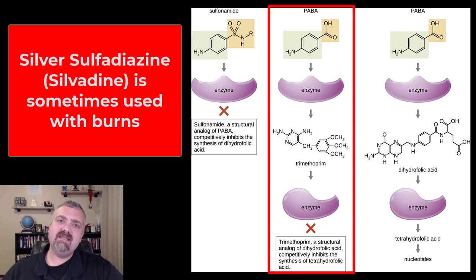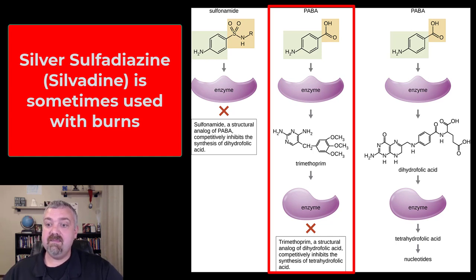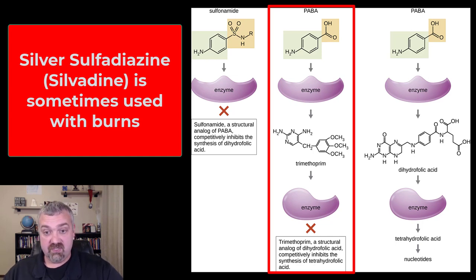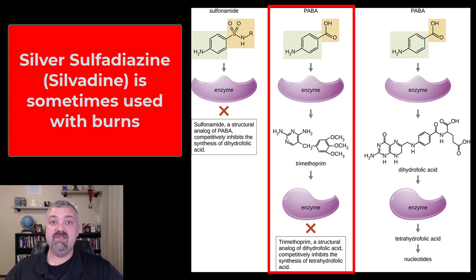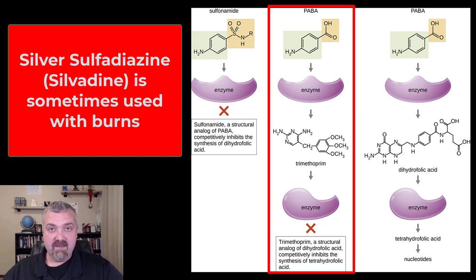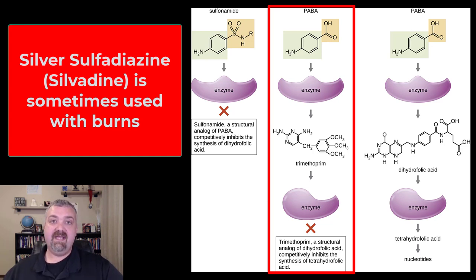One last use — you might see silvadine, or silver sulfadiazine — that's an example of a sulfa drug that can be used with burns. So these are the most important anti-metabolite drugs. The sulfa drugs are very broad spectrum and can be used for a wide range of things unless you're allergic to them. They work because they're blocking a metabolic process that bacteria need but we don't, so they are selectively toxic. I hope this helps. Have a wonderful day. Be blessed.